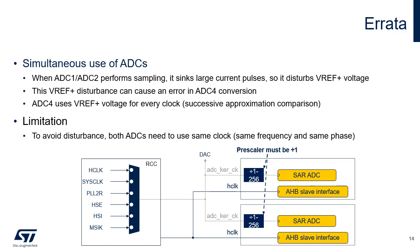Concurrent sampling on ADC1-ADC2 and ADC4 can cause errors. However, enabling the VREF protection function is not sufficient; a second condition is required. Both ADCs need to use the same clock, same frequency, and same phase. The prescaler used to generate the sampling and conversion clock must be initialized with value 1.